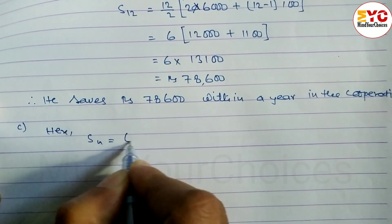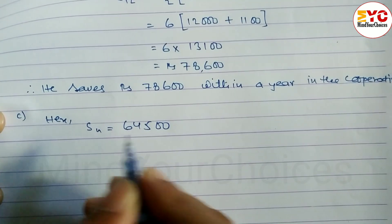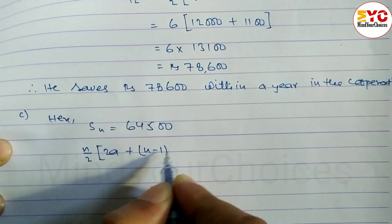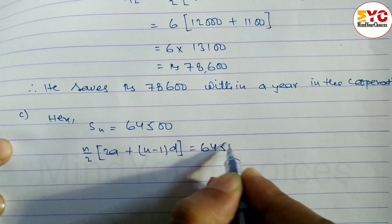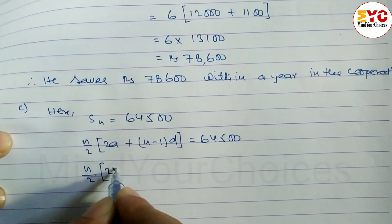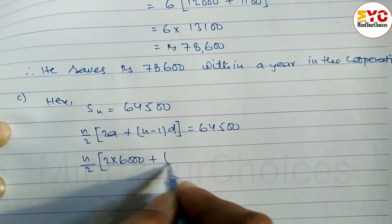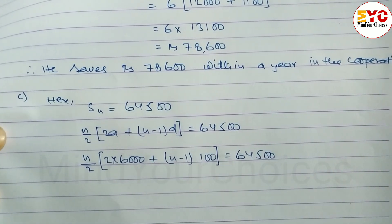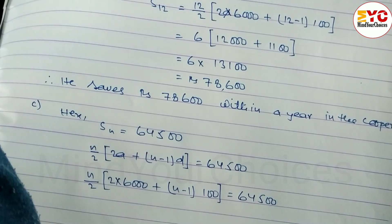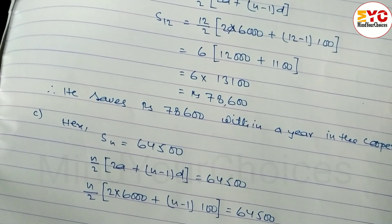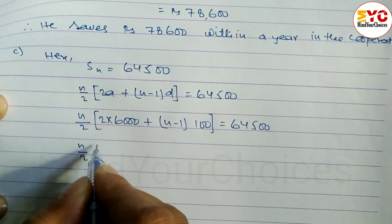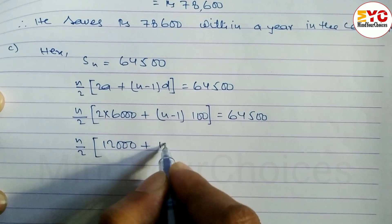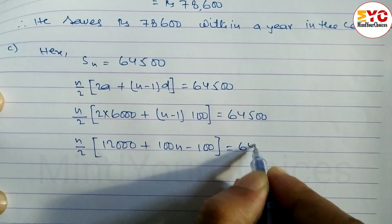We set Sn equal to 64,500, with a = 6,000 and d = 100. Substituting into the formula: n/2 × (12,000 + (n−1)×100) = 64,500, which gives n/2 × (12,000 + 100n − 100) = 64,500.